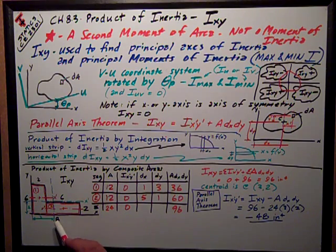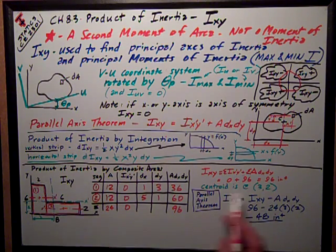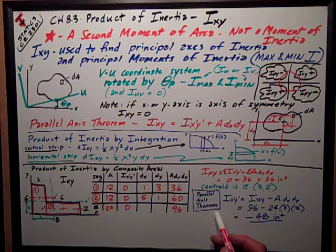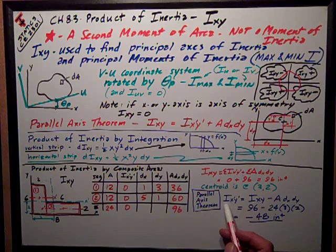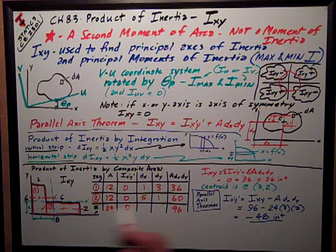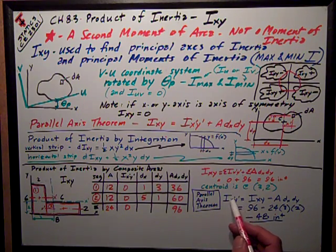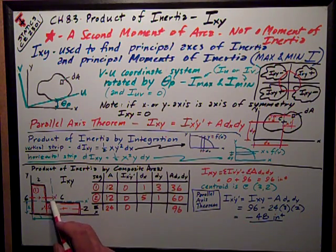The X bar distance to the centroid is three and the Y bar distance is two. Then I can use the parallel axis theorem and rearrange it to get the product of inertia of this entire composite L-shape, IX prime Y prime, the product of inertia about its own centroidal axes.